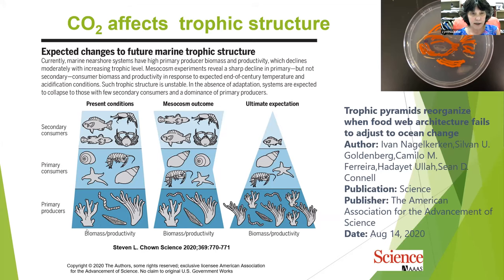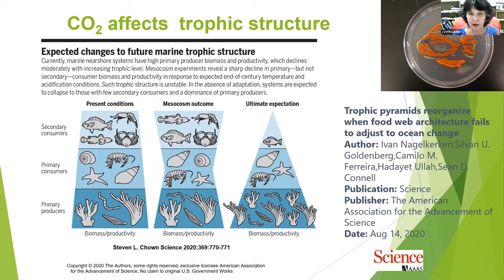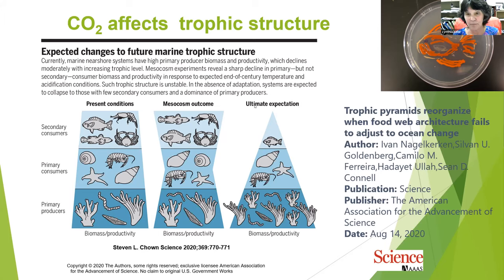On the left is the present condition — you should have more primary producers, then primary consumers, and fewer secondary consumers to sustain an ecosystem. What they found was that by doing this, they decreased the number of primary producers. By decreasing primary producers, you had less food for primary consumers. However, you had more room for secondary consumers. This is not a stable trophic structure, and what they were saying will happen is a collapse of secondary consumers and primary consumers, leaving just primary producers. Essentially, by affecting our oceans we're going to affect our food chain — we could lose all the fish we like to eat because there's not enough food at the right trophic levels.